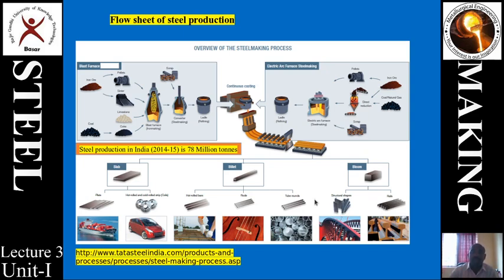Alternatively, instead of an LD converter, you can use an electric arc furnace to continuously cast various semi-finished products. The raw material for an electric arc furnace can be solid pig iron in the form of sponge iron, a combination of steel scrap, or a combination of pellets. Steel produced this way is taken into ancillary plants for further processing.